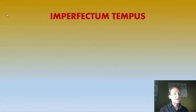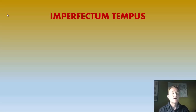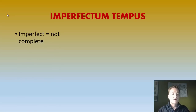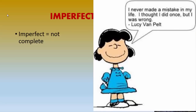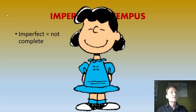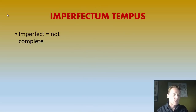Imperfectum tempus — the imperfect tense. This is new to you, so you'll want to take special notes on it. I'll pause along the way to encourage you to write three things down in your notes. When we're talking about grammar, the term perfect doesn't mean flawless — it means completed. So when we talk about the imperfect tense, we are referring to things in the past as an ongoing circumstance.